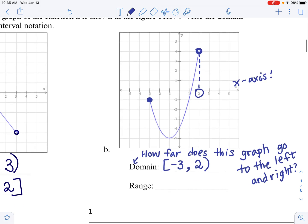If the question that I ask when looking at the domain is how far does this graph go to the left and right? Well, for the range, you should be looking at how low does it go? And how high?